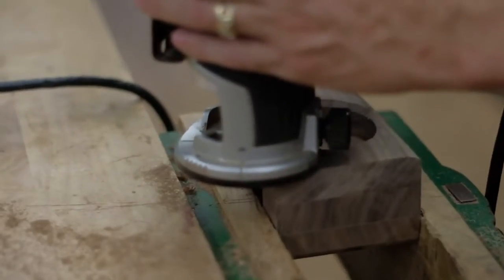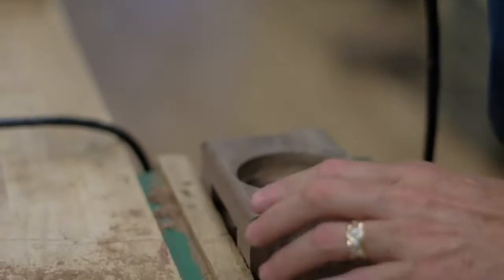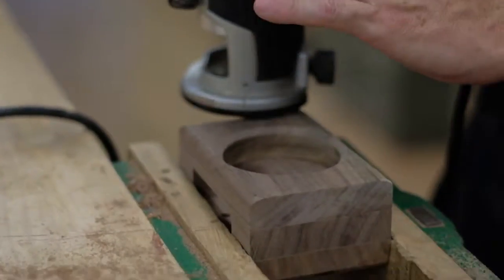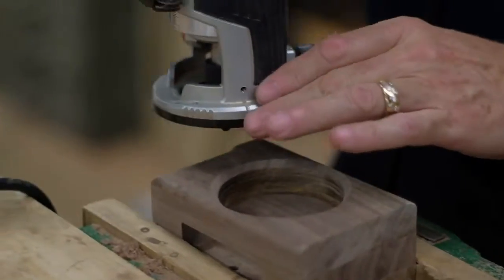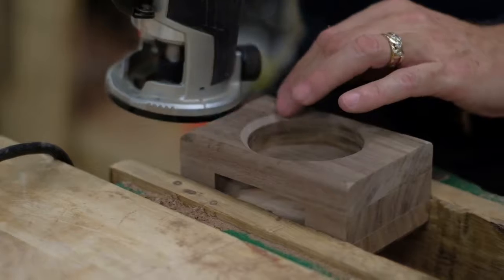A student in George Wurzel's woodworking classroom is using a palm router to route the edges of a project he's working on. At this point the project is incomplete. It is a box about three inches wide by five inches long by two inches thick.